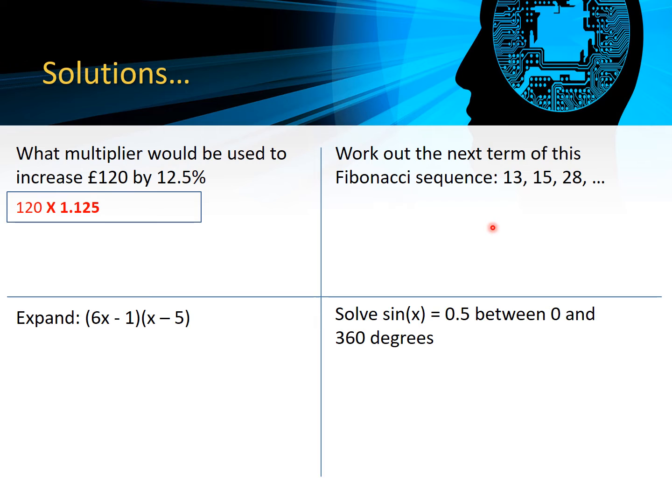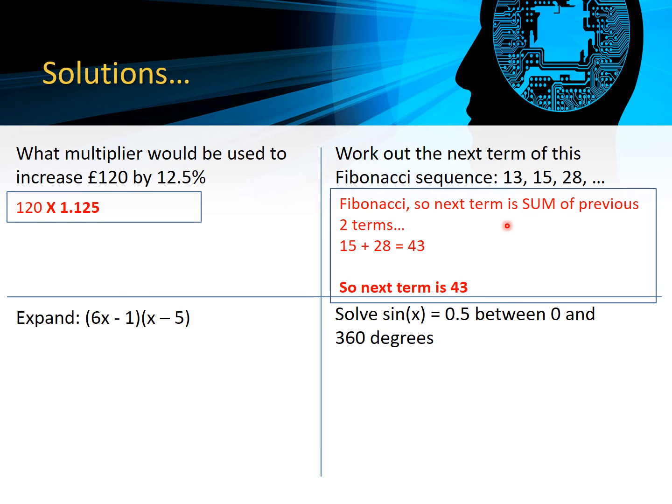The next term in the Fibonacci sequence. Remember that what we need to do is add up the previous two terms, so our next term is going to be 15 plus 28, which is 43.